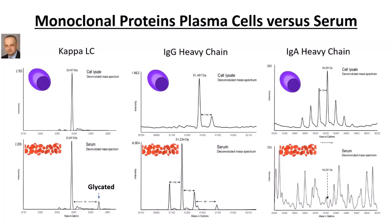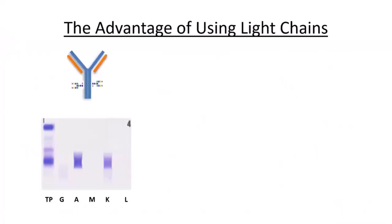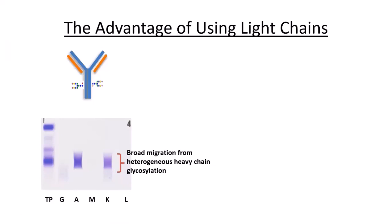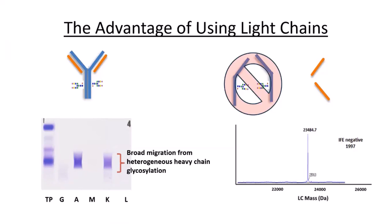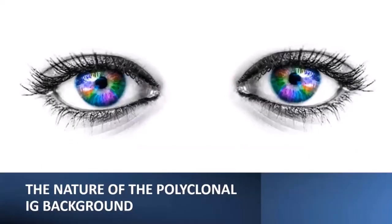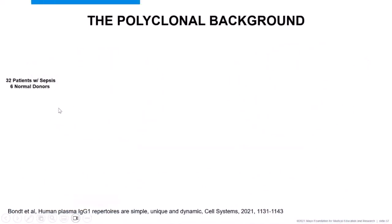This explains why IgA tends to migrate very broadly on gels — heterogeneous heavy chain glycosylation spreads the charge. But when we drop the heavy chains and use only the light chains, we can detect these clones clearly. A Netherlands group is reporting that the 30 most abundant IgG1 clones account for more than two-thirds of quantitative IgG1 — a striking finding that challenges our view of how the immune system works.